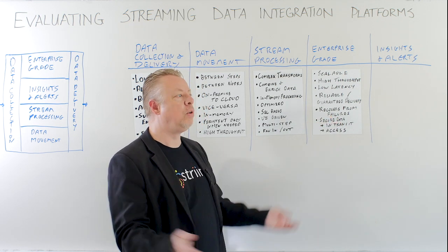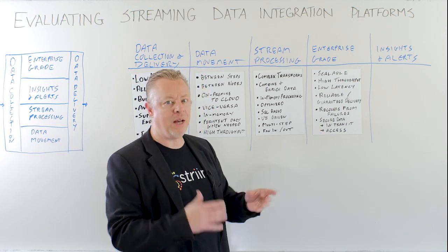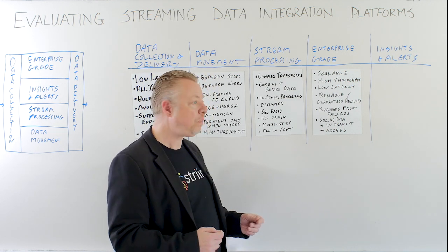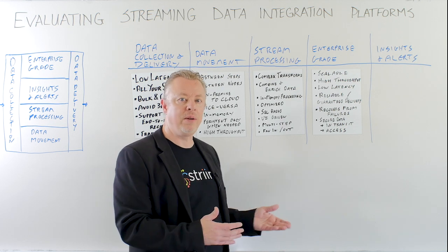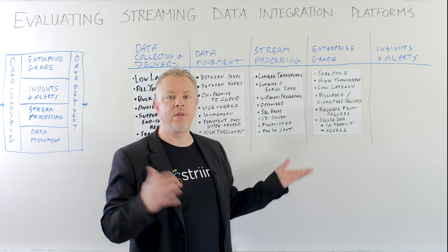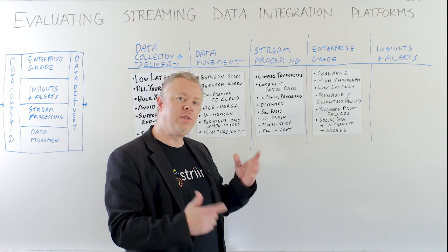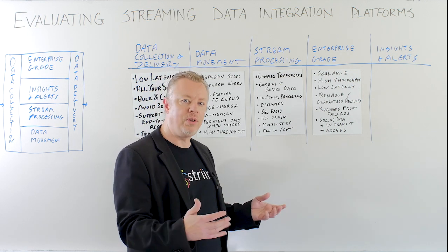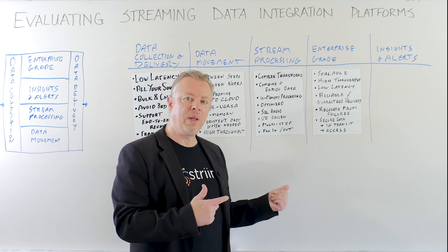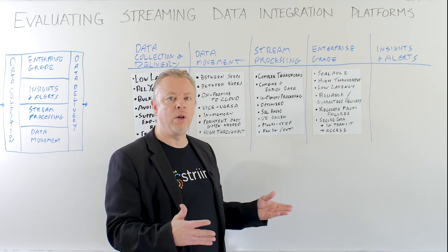Security is paramount. You need to secure data in transit — encrypted across the network — but also control who has access to the data: who can work with individual data streams, who can see the data, who can build applications, and who can view results. Security needs to work across the entire end-to-end platform and cover every component, ensuring only authorized people can work with the data.